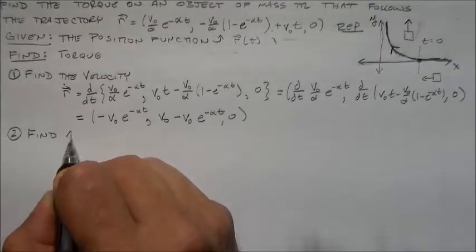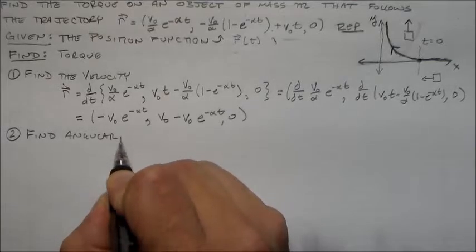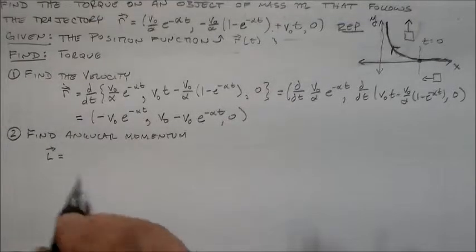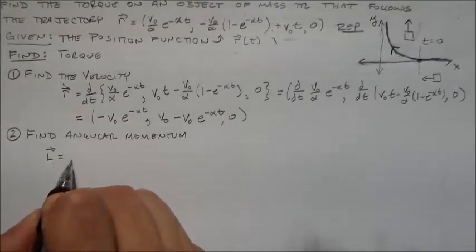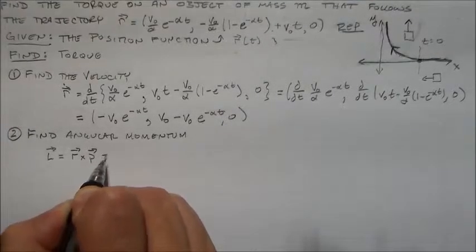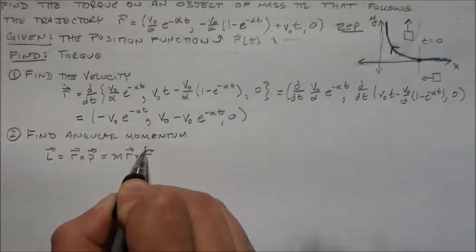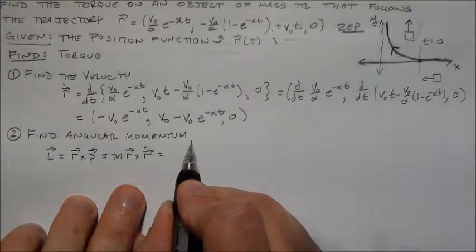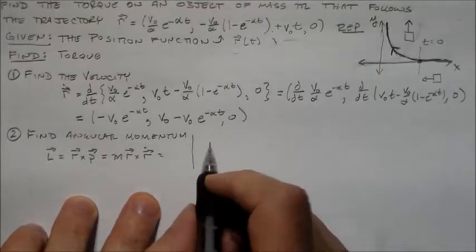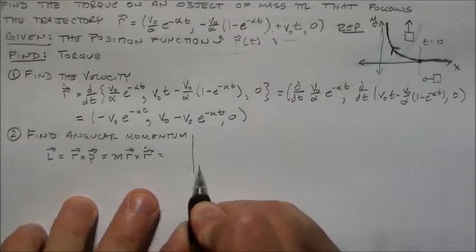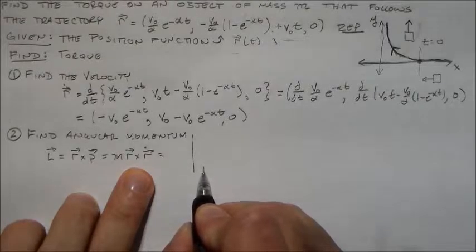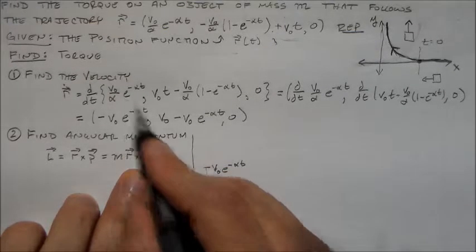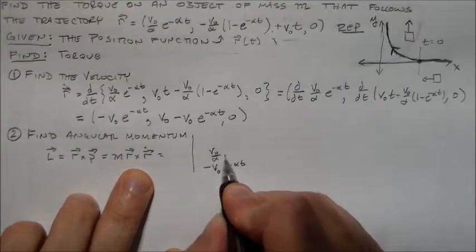Now we want to find the angular momentum. So if we have the velocity now, we can find the angular momentum because we also have the position and we have the mass. So L, the angular momentum, is equal to something interesting like R cross P, the momentum, which is equal to MR cross R dot, the velocity, which is equal to, let's go ahead and do this matrix thing. So I don't think I've done this matrix thing enough for you.